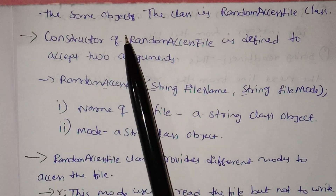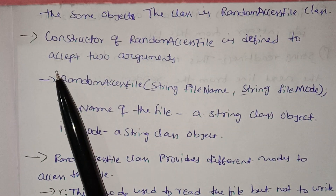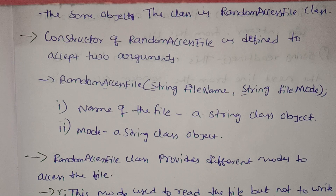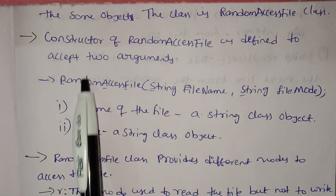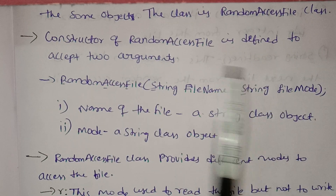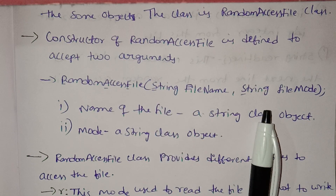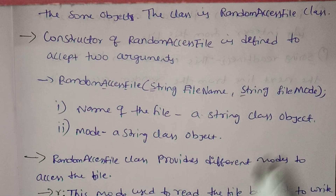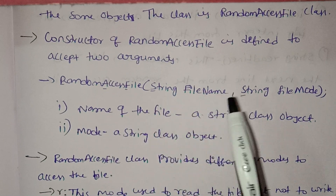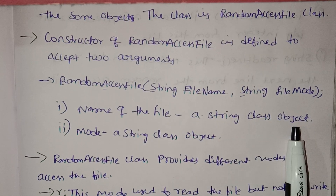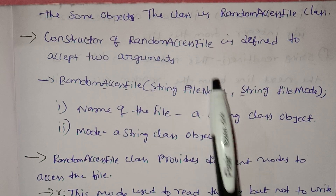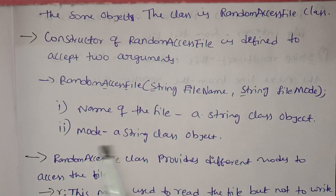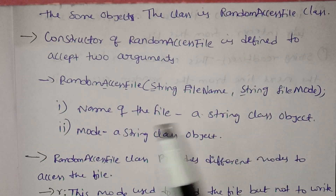The constructor of random access file takes two arguments. When you call this class with the new operator, there is a constructor. There are two arguments: one is the string file name and the other is the string file mode. File name is a string class object representing the name of the file, and file mode is also a string class object.